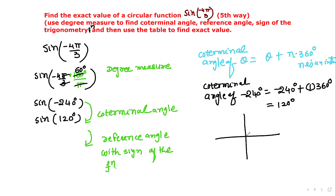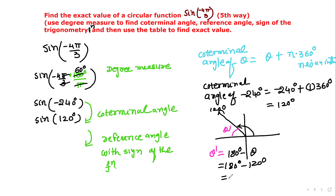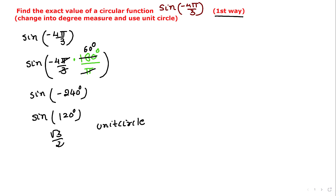Drawing 120°, which is located in quadrant 2. The reference angle in quadrant 2: 180° - 120° = 60°. Do not forget — the reference angle comes with the sign of the function in that quadrant. Sine is positive in quadrant 2, and the reference angle is 60°. Using the table, sine(60°) = √3/2. So our exact value is √3/2.